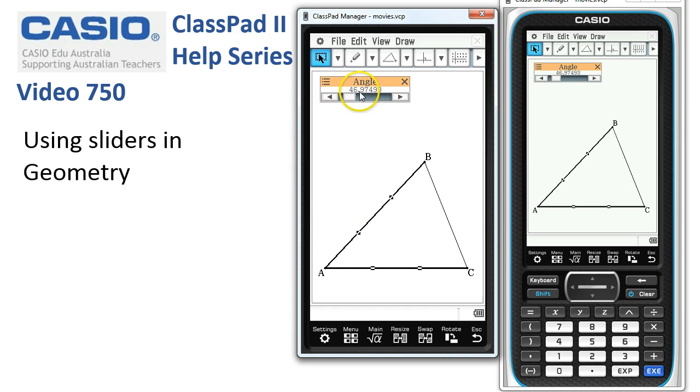At the moment it's measured the angle to be 46.9, and as I tap on the slider here, it's toggling backwards and forwards, increasing or decreasing the angle down to a minimum of 40, and now it's incrementing it in steps of 10 degrees.